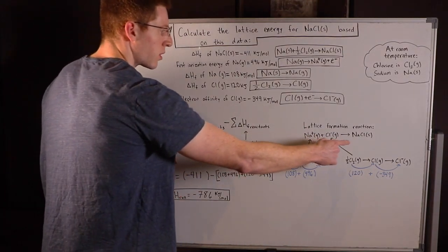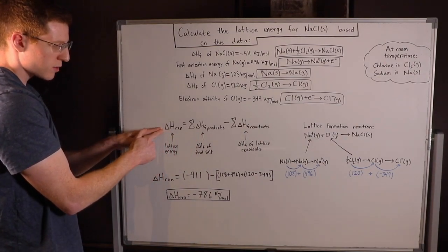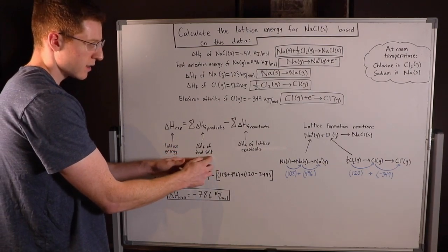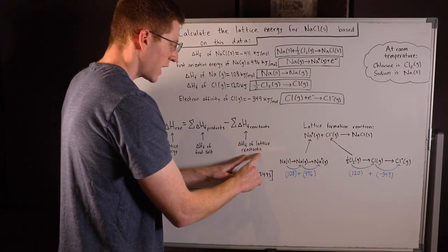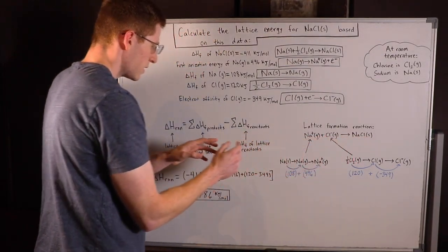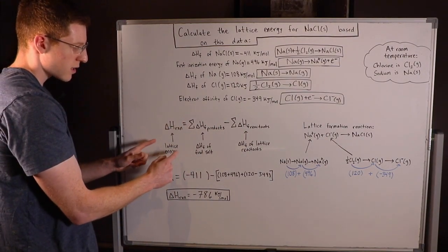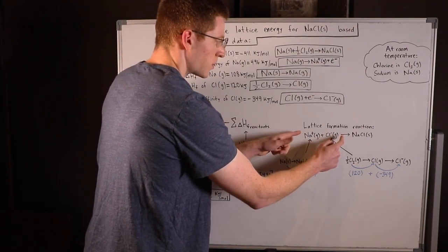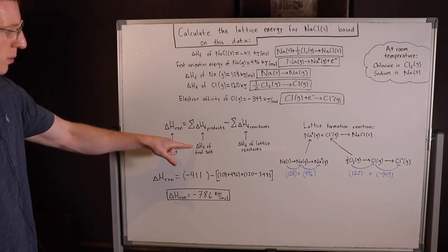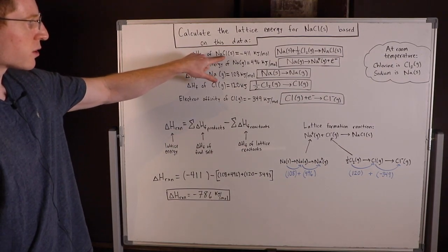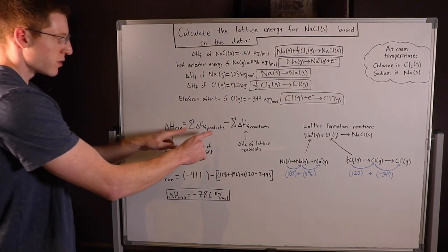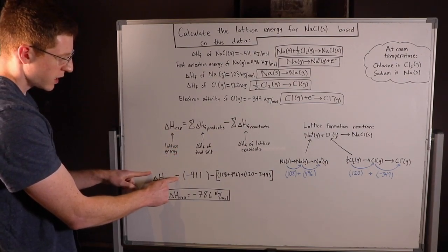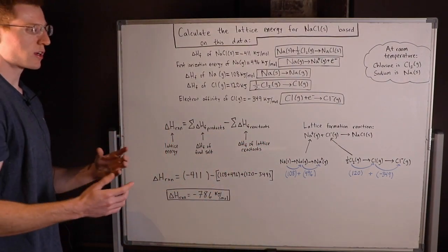If we apply Hess's law to this process, the overall enthalpy of the reaction is the energy that it takes to make the lattice. The product is the final lattice, and the reactants are the lattice reactants. So Hess's law takes the overall process and thinks about it in terms of enthalpy: the overall enthalpy is the lattice energy, the overall enthalpy of the products is the enthalpy of the final salt, and the overall enthalpy of the reactants are the enthalpies of the lattice reactants. They gave us the enthalpy of the final lattice — it's negative 411 kilojoules per mole. The lattice energy, or delta H of the overall reaction, is what we're solving for.